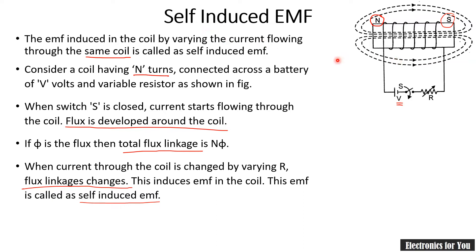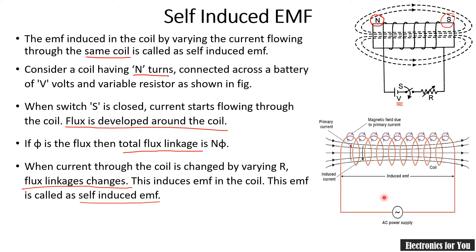One way to change the current is by directly applying an AC supply. We know that AC supply varies with respect to time — for example, if AC is a sinusoidal wave, its magnitude varies with time. Therefore, if we apply AC, there is definitely a change in current, and as explained previously, if there is a change in current the EMF is induced in the coil, and it is known as self-induced EMF.